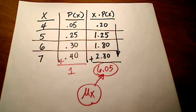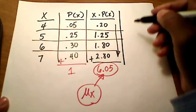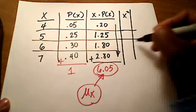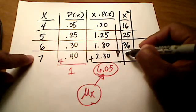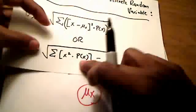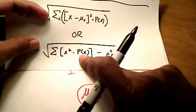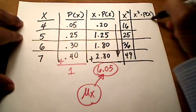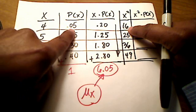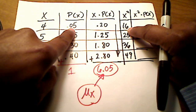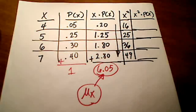Let's work on this problem using the bottom formula. The formula says first square every x: 4 squared is 16, 5 squared is 25, 6 squared is 36, and 7 squared is 49. The next part of the formula says take all those squared x values and multiply by the probability of x — so x squared times P(x). We multiply 16 times 0.05, 25 times 0.25, 36 times 0.30, and 49 times 0.40.